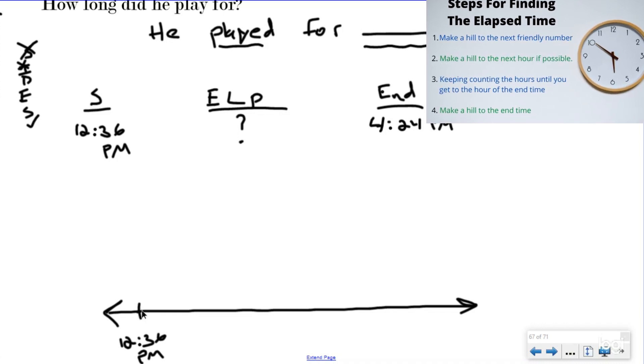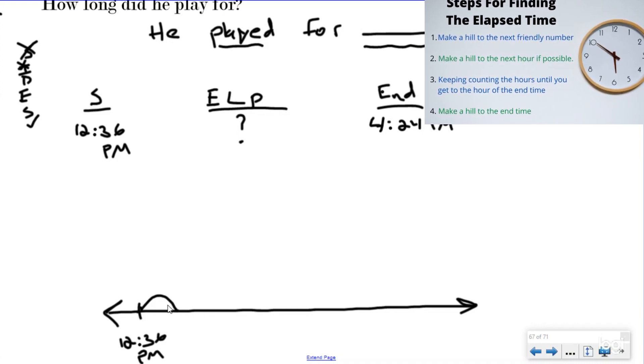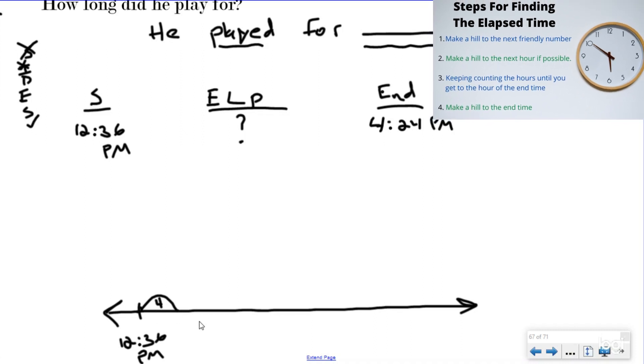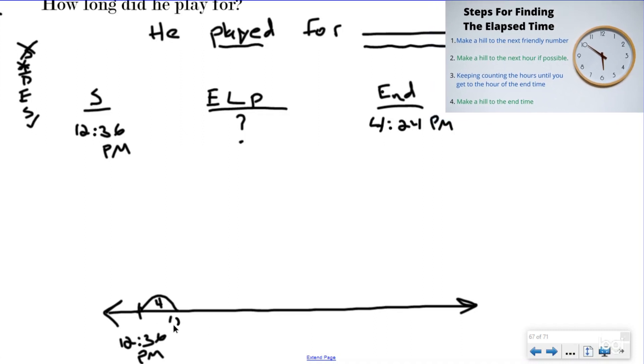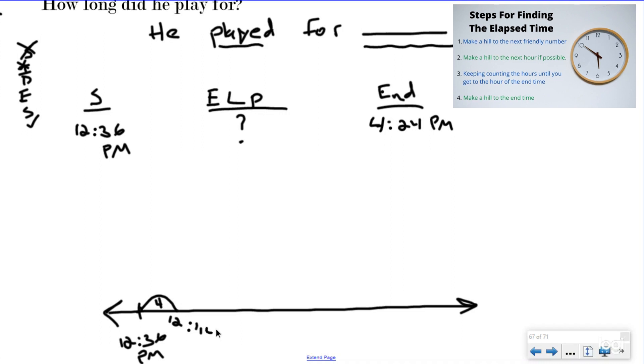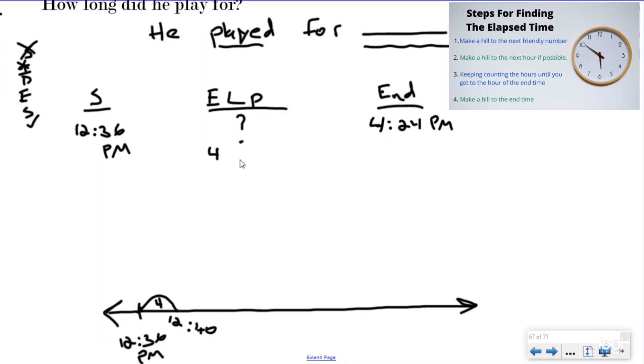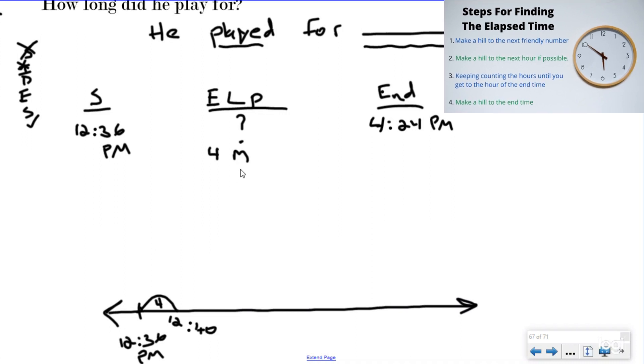And I'm going to remember my first step, which is I want to get to the first friendly number. And if I'm at 36, my first friendly number is going to be 40. So I need to add four minutes here to get to 12:40. And then I'm going to write down those four minutes because I put it on my number line. I write it down in my elapsed time. From there, I'm going to go 20 minutes because I know 20 minutes will get me to 1 o'clock. Now, I'm going to put 1 o'clock down here just to kind of see it. And I'm going to write down 20 minutes up there.